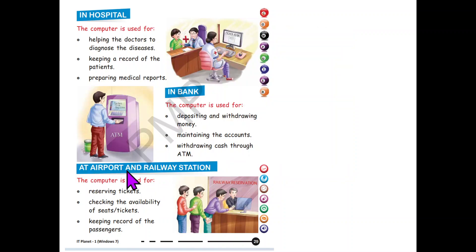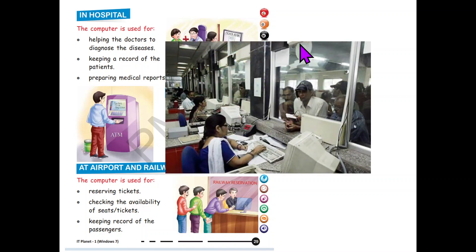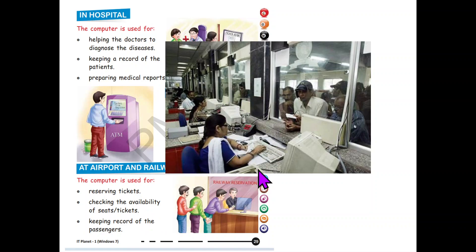The computer is also used at airports and railway stations. It is used for reserving tickets — earlier people had to stand in line, but now you can reserve tickets from your home if you have a computer, mobile, or laptop. It also helps check the availability of seats or tickets. The person sitting at the counter checks whether there is a seat in the train, and the computer helps them.